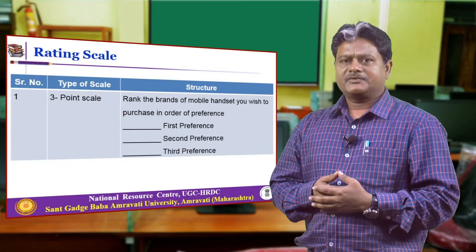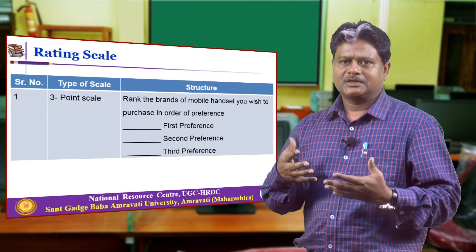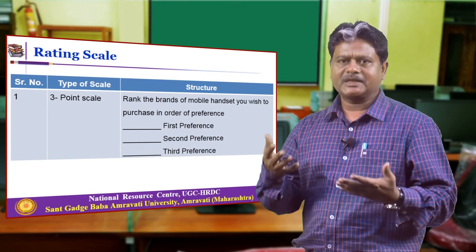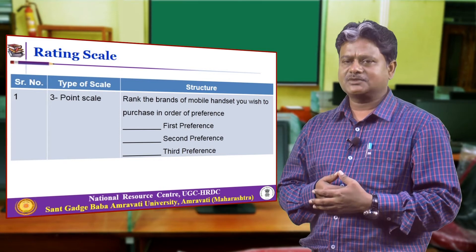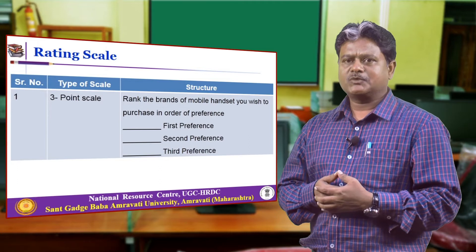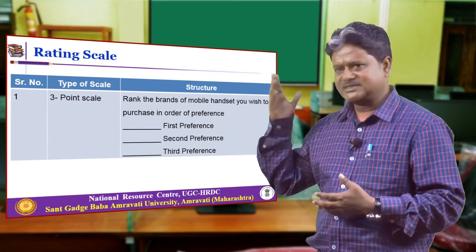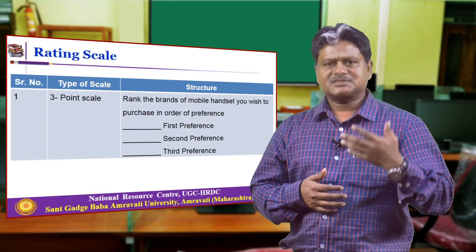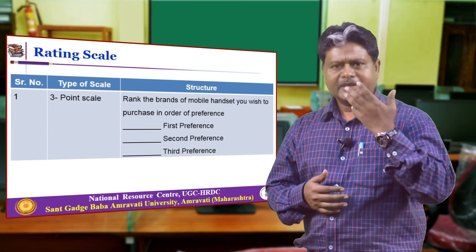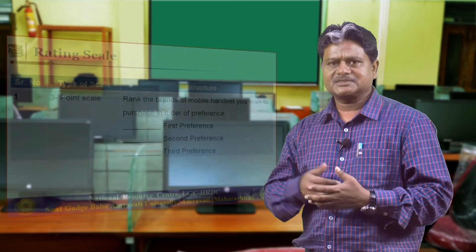We will start with the first scale, that is the 3-point scale. Here we have taken one particular question that is related to the mobile handset. We like to know the attitude of an individual about the mobile handset in general. The respondent has to rank the mobile handset they wish to purchase and mention their order of preference: first preference, second preference, and third preference. Based on this preference, we will be able to have some inputs about the attitude that individual holds about the different objects — in this case, a mobile handset.